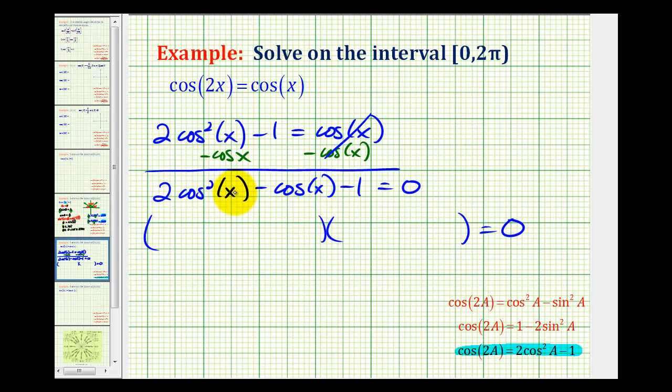The factors of 2cos²(x) will be 2cos(x) and cos(x). Then the second positions must come from the factors of -1 so that the inner product and outer product have a sum of -cos(x).